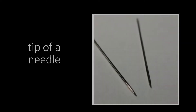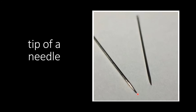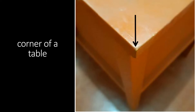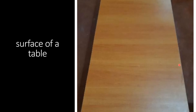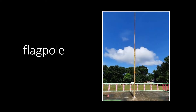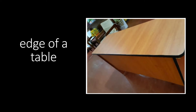Let's have examples. Tip of a needle — what do you think is this? Is it a line, a point, or a plane? It's a point. Next, corner of a table — it's a point. Blackboard — it's a plane. Surface of a table — that is also a plane. Next, flagpole — this is a line. Last one, edge of a table — that is also a line.